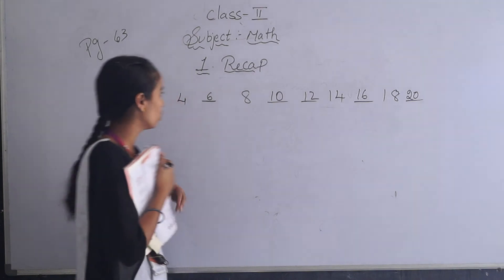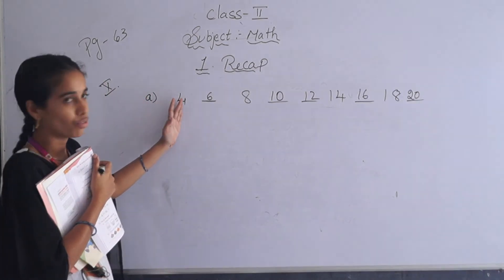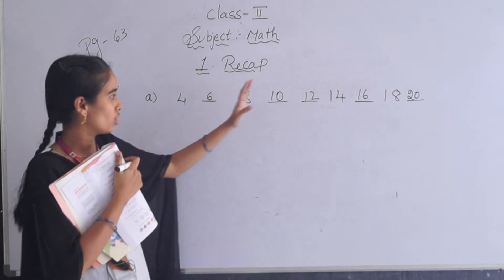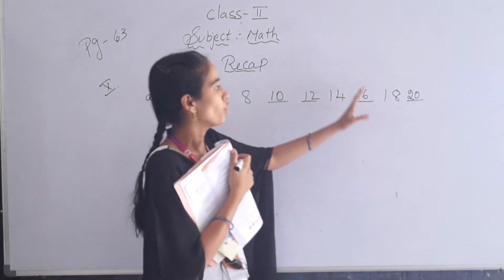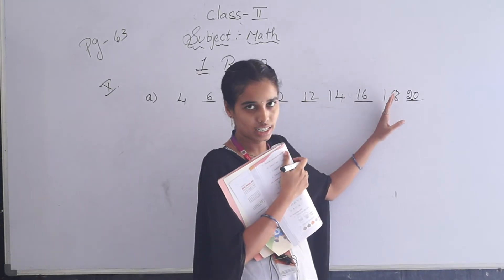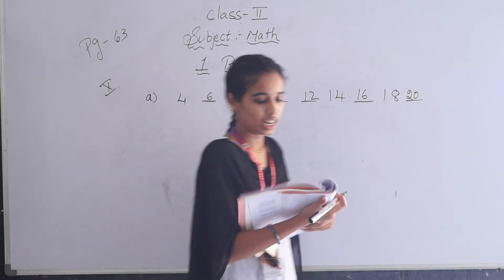This is nothing but 2 table. 2 twos are 4, 2 threes are 6, 2 fours are 8, 2 fives are 10, 2 sixes are 12, 2 sevens are 14, 2 eights are 16, 2 nines are 18, 2 tens are 20.